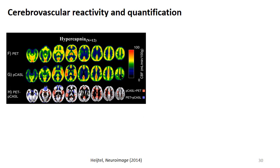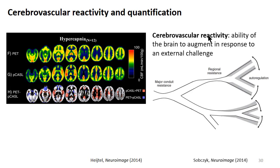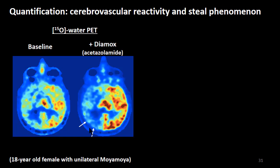In the future, clinical trials will be based on cerebrovascular reactivity. Hearkening back to the Amsterdam group comparing PET and ASL, they did this not only at baseline but during hypercapnia — breathing elevated CO2 to elevate CBF and look at this response. This is a stress test for the brain where it can potentially augment or not in response to an external challenge, telling us something different from baseline perfusion. In a Moyamoya patient scanned on PET-MR, we administered a vasodilator called Diamox and waited about 20 minutes for its full effect. On the unaffected side there is an increase in blood flow, but on the stenotic side there is an interesting decrease — called cerebrovascular steal — indicating poor prognosis.